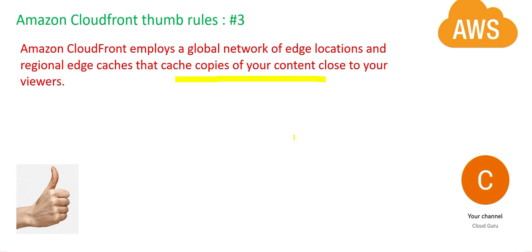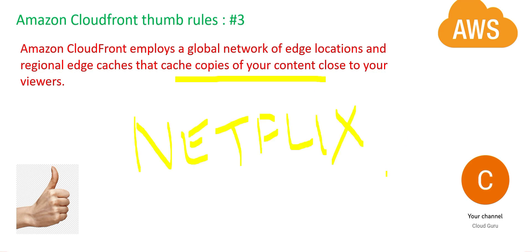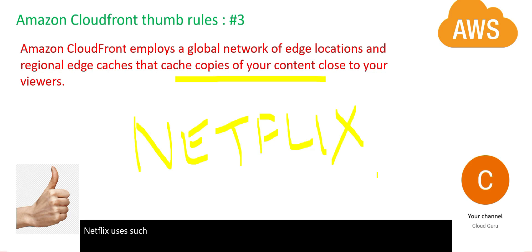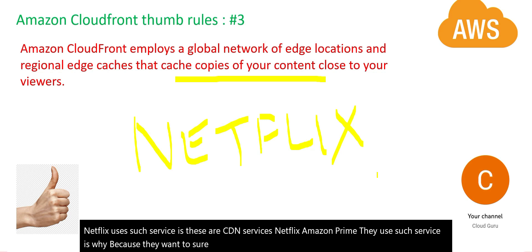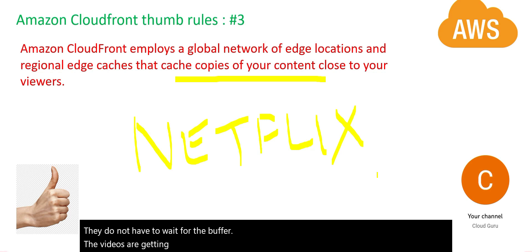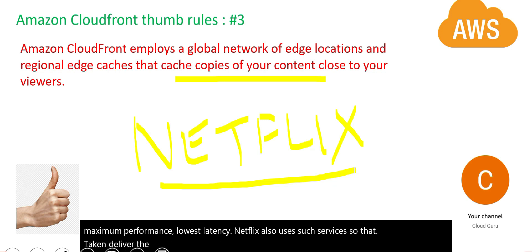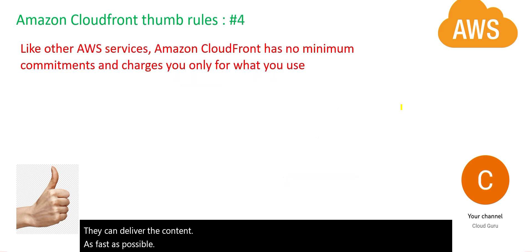CloudFront is all about speed. If you look at something like Netflix or Amazon Prime, they use CDN services like CloudFront to make sure the end user watching content doesn't have to wait for buffering. In order to provide maximum performance and lowest latency, Netflix uses such services so they can deliver content as fast as possible.